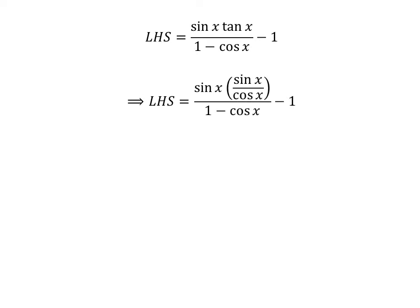We know tangent of x is equal to sine of x upon cosine of x. So, the left hand side of the identity is equal to sine of x times sine of x upon cosine of x, upon 1 minus cosine of x, minus 1.